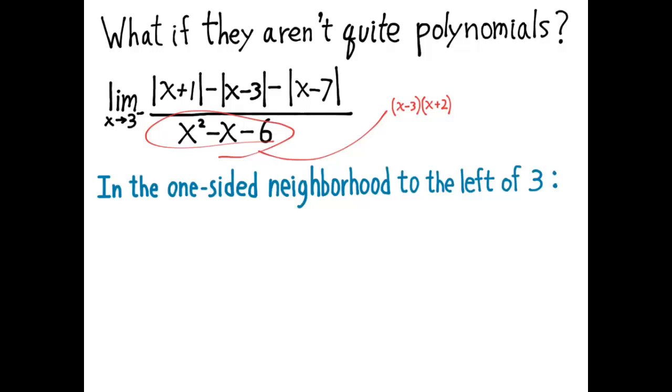then we know that the absolute value of x plus 1 is just x plus 1, because something just to the left of 3 plus 1 is a positive number. The absolute value of x minus 3 is 3 minus x, because numbers like 2.99, when you subtract 3 from them, you get a negative result.